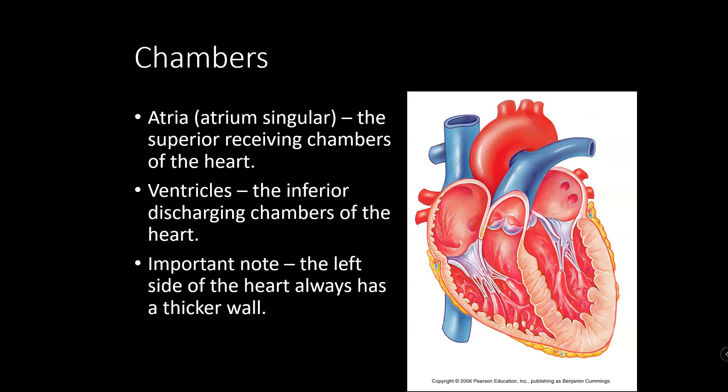The chambers of the heart: we are mammals, and mammals have four-chambered hearts — two superior atria and two inferior ventricles. The atria are receiving chambers, so blood comes into the heart via the atria. Atrium is singular, incidentally. The ventricles are the actual pumps that pump blood out into circulation.